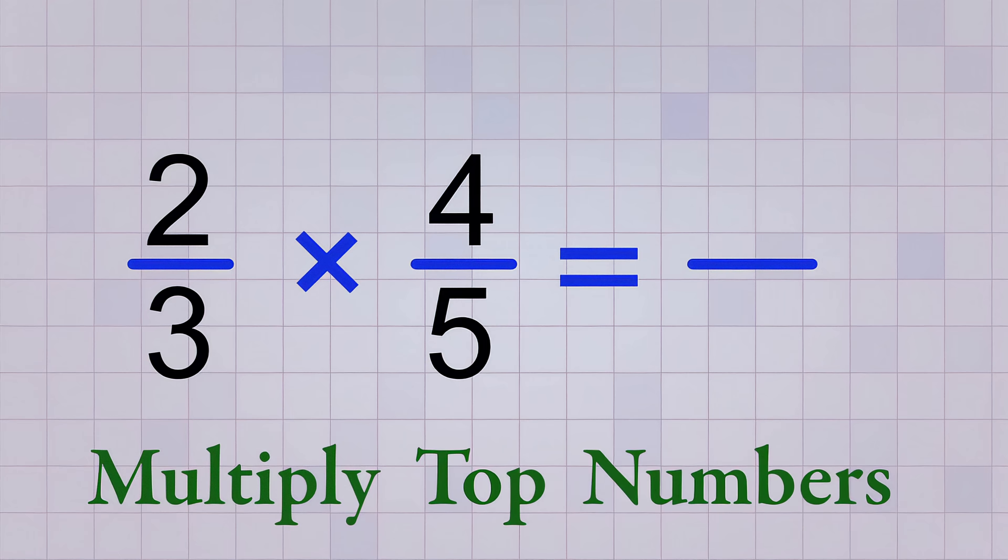Next, we multiply the top numbers. 2 times 4 equals 8, so 8's the top number of our answer. And last, we multiply the bottom numbers.